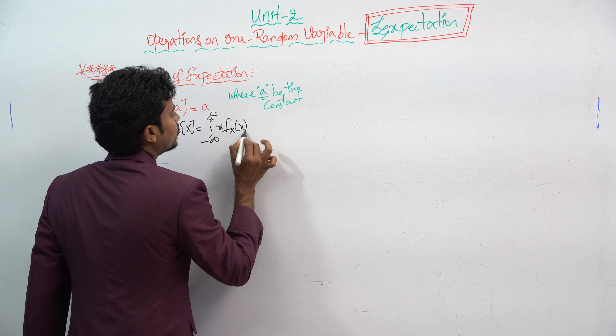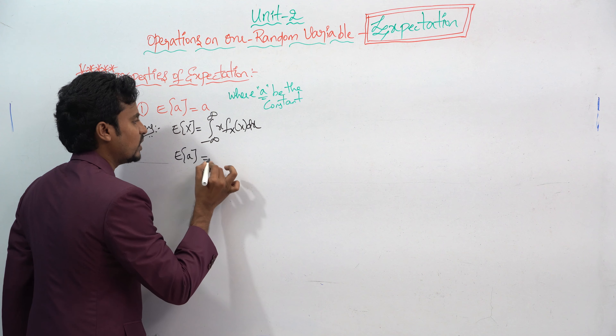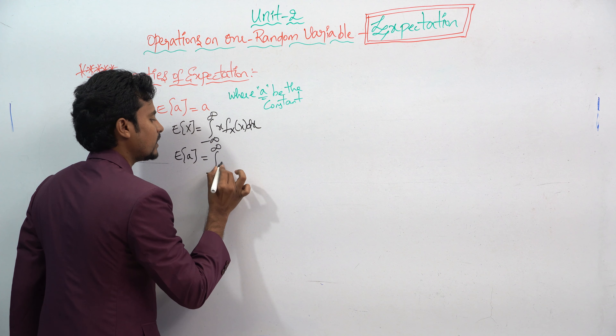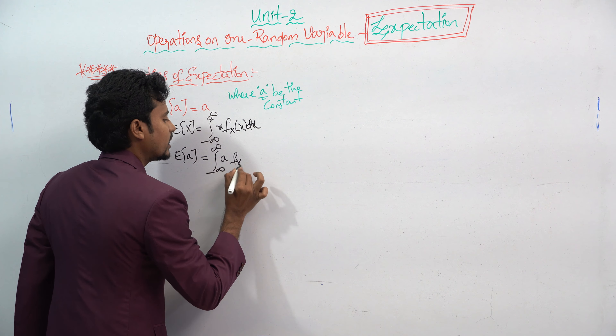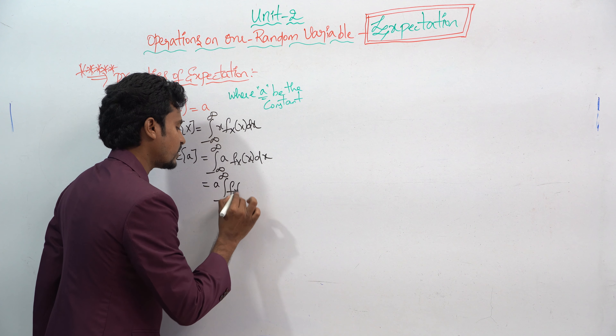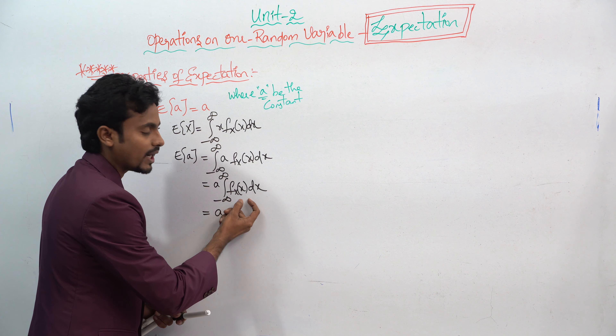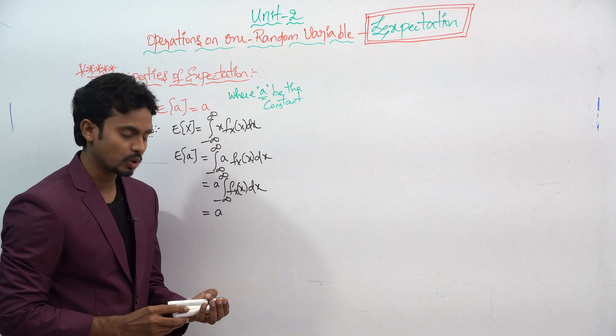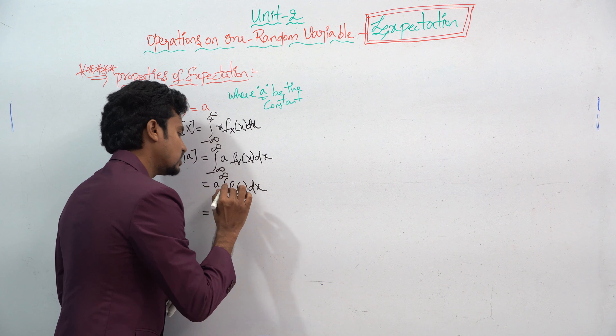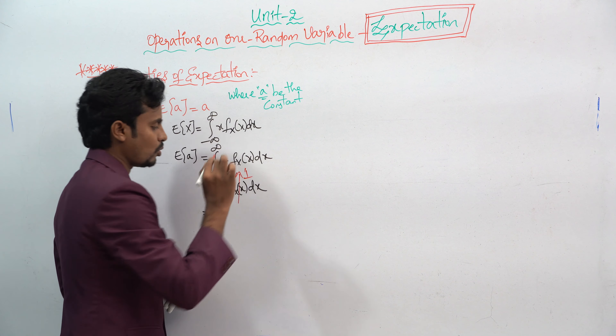Here you can see how we can solve this. You already know the formula for expectation: E(x) = integration from minus infinity to infinity of x times f(x) dx. Now replace x with a constant. So E(a) = integration from minus infinity to infinity of a times f(x) dx. Since a is a constant, take it outside: a times integration from minus infinity to infinity of f(x) dx.